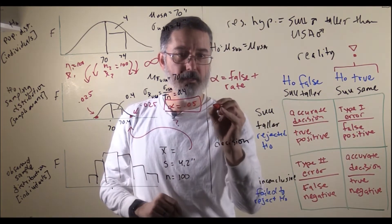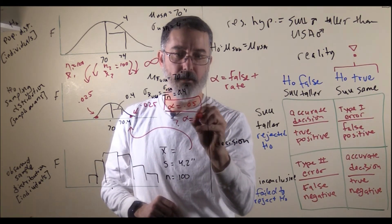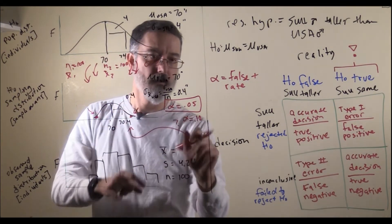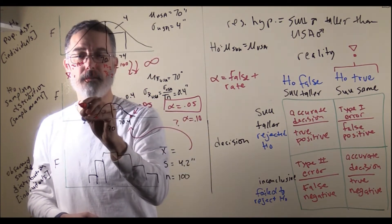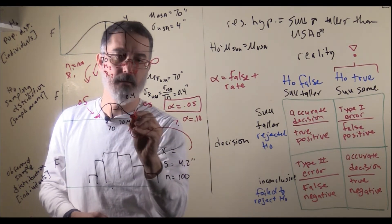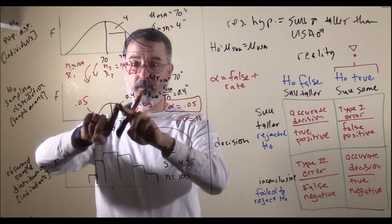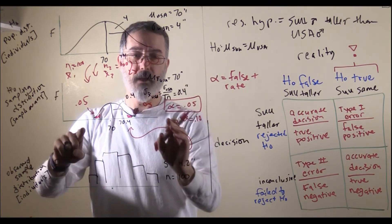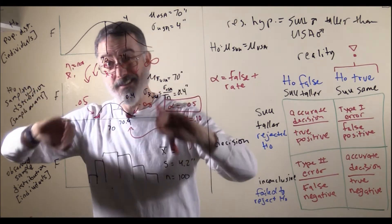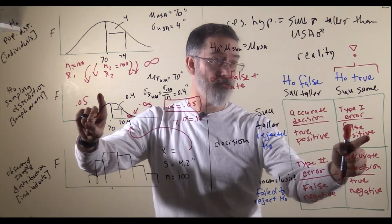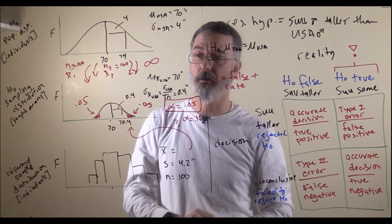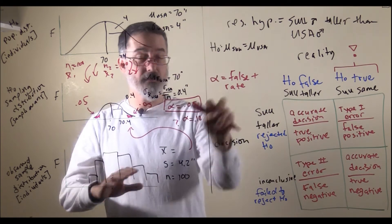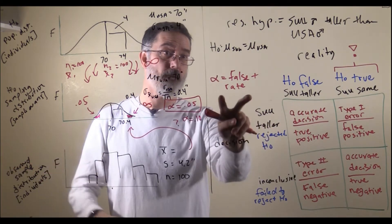Notice that if we change alpha to .10, we would split .05 on each side, pushing the cutoffs out a little bit. There would still be 10% of the area of this curve where, just due to random sampling alone, we would observe samples more extreme than our cutoffs and decide to reject the null hypothesis — when we should not have. So alpha, the .05 we have been discussing, is the rate at which we reject the null hypothesis when it is true — our false positive rate. We can place alpha in this box on the grid.